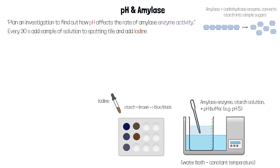Over time, as the amylase breaks down the starch, there will be less and less starch left, so it will turn less blue-black. Eventually the mixture will stop turning blue-black when iodine is added and will remain brown instead. This means all the starch has been digested by the amylase.